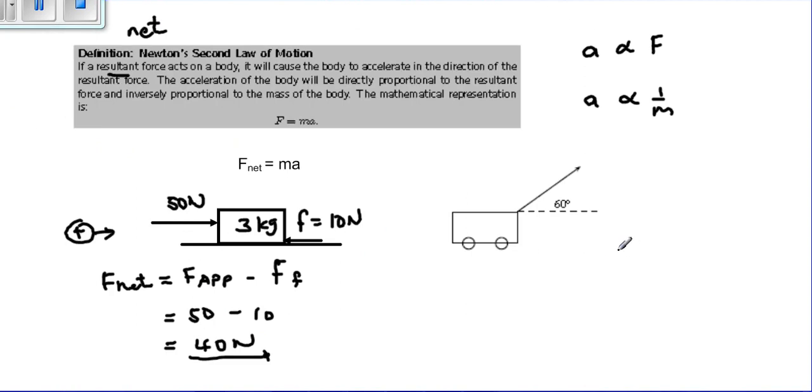Now to take it a little further, we may have a case where the applied force is not horizontal or in the same direction of the motion. It's at an angle to the motion. Here we have an angle of 60 degrees, and say we are applying a force of 100 newtons.